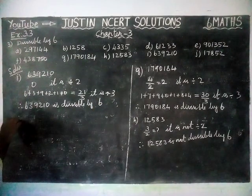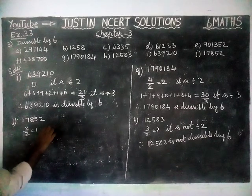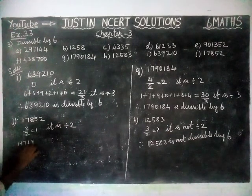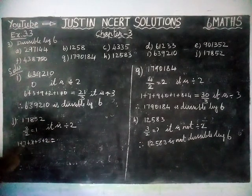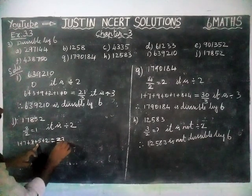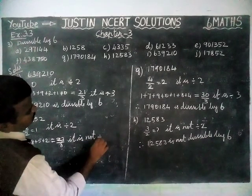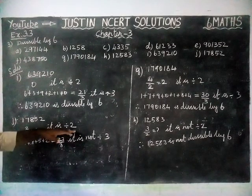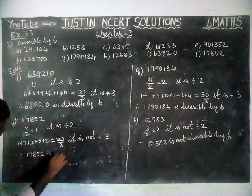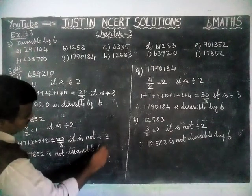Next, we are going to see option J, the last sum. Here, the last digit is 2. This 2 is divisible by 2, so it is divisible by 2. Next, we check the sum of its digits: 1 plus 7 plus 8 plus 5 plus 2 equals 23. This 23 is not divisible by 3. Therefore, it is not divisible by 3. The given number is divisible by 2 only, not by 3. Therefore, the given number is not divisible by 6.